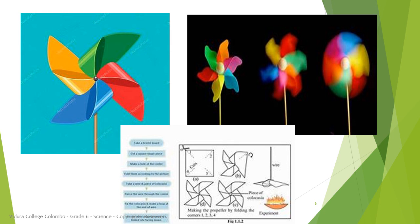Now we will do an activity which is in your textbook page number 50. Here we are going to prepare a wind propeller. I have given things you need to prepare this object. Please go through your textbook for the method. Now just imagine a wind propeller is in your hand. What can you observe? Nothing — it will remain without rotating. Now take your wind propeller near to a fan. What can you observe? Yes, it starts to rotate.